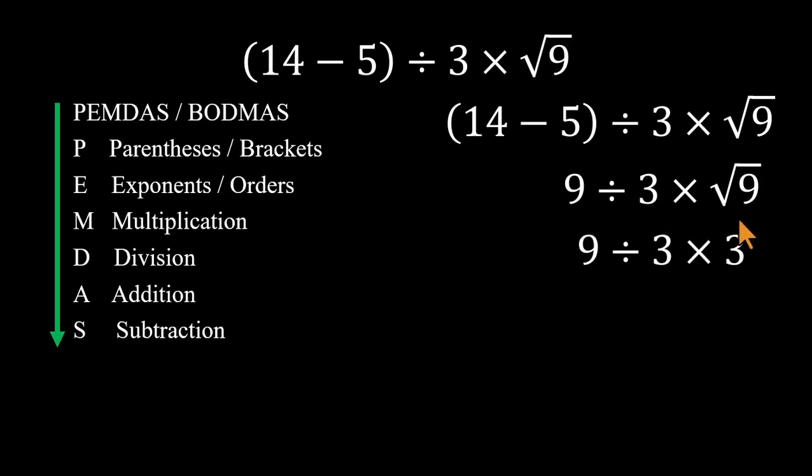So the expression becomes 9 divided by 3 times 3. Now, a lot of people think, okay, multiplication comes before division. So they do 3 times 3 equals 9, then 9 divided by 9 equals 1. Boom, done. Except that's wrong.